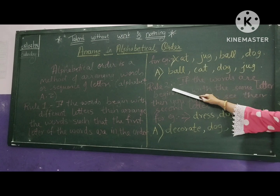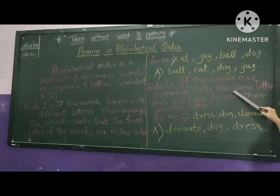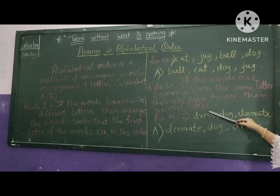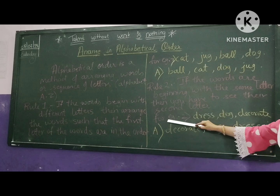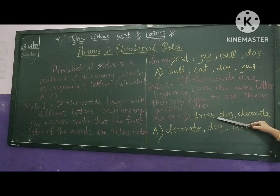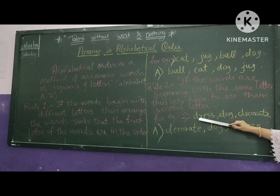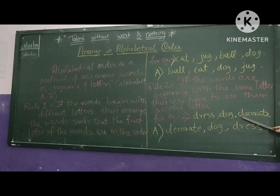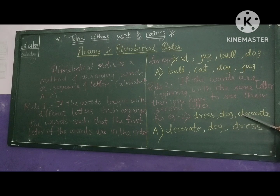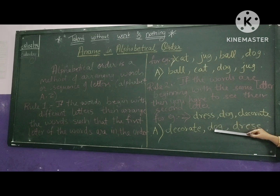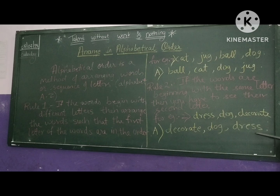Rule number two: if the words begin with the same letter, then you have to look at their second letter. If the second letter is the same, then look at the third letter, and so on. For example — Dress, Dog, Decorate. The first letter is the same: D, D, D. The second letters are R, O, E. E comes first, so Decorate is first. Then Dog — O. Then Dress — R.